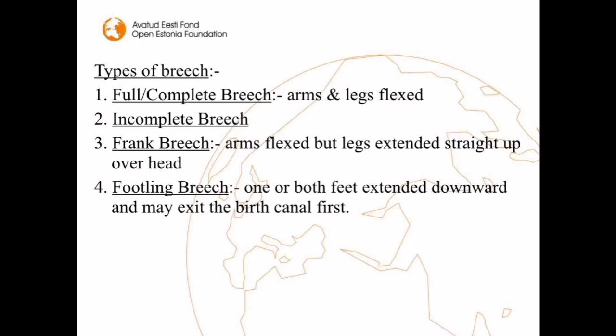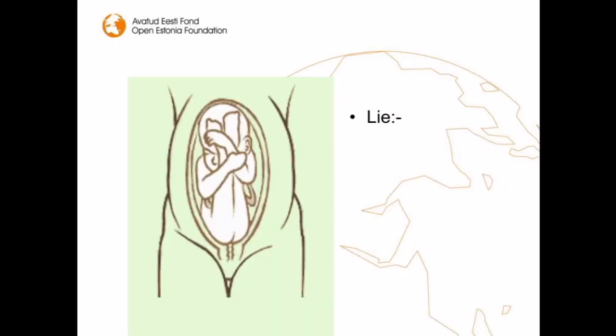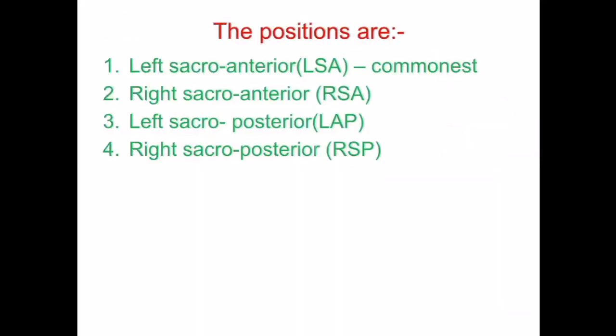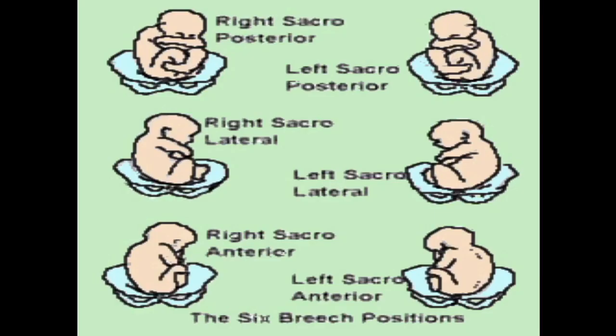With breech presentation, the lie is longitudinal, the presentation is breech, and the denominator is the sacrum. The positions are left sacral anterior — which is the commonest — right sacral anterior, left sacral posterior, and right sacral posterior respectively. Here is an image showing the types of presentations and the lie.